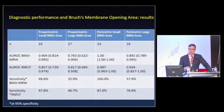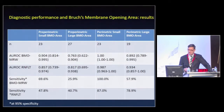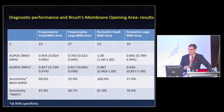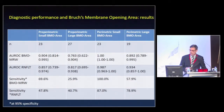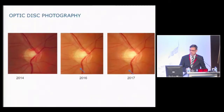But in the large disc, the nerve fiber layer performed better than the minimum rim width measurement at the optic disc. So you have to be aware of what kind of patient you are measuring in order to estimate the diagnostic capability of both measurements.